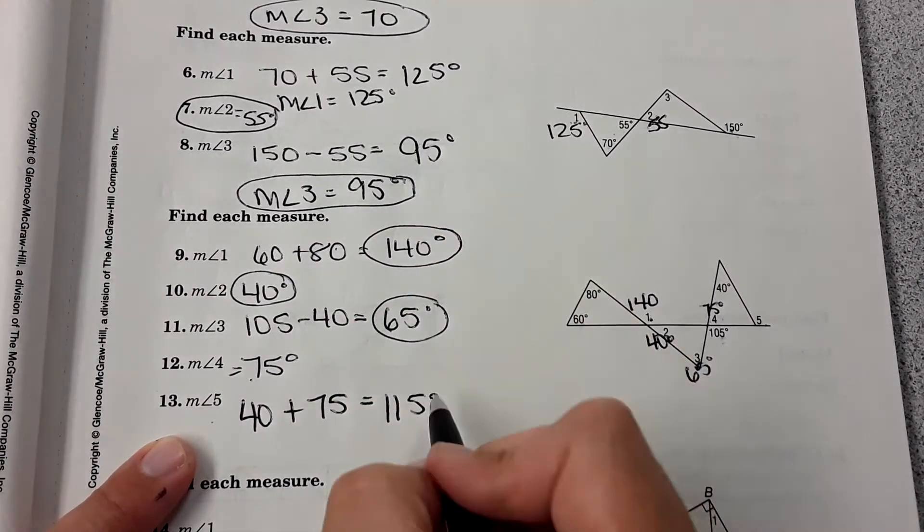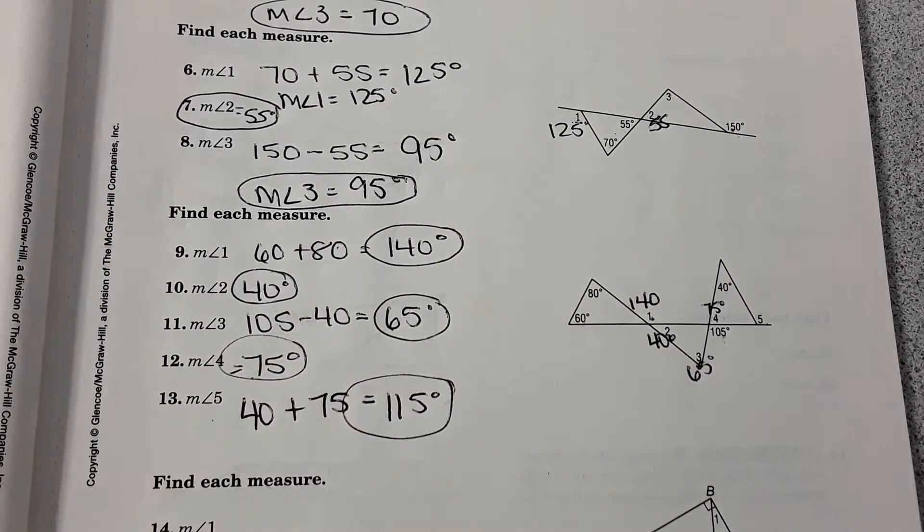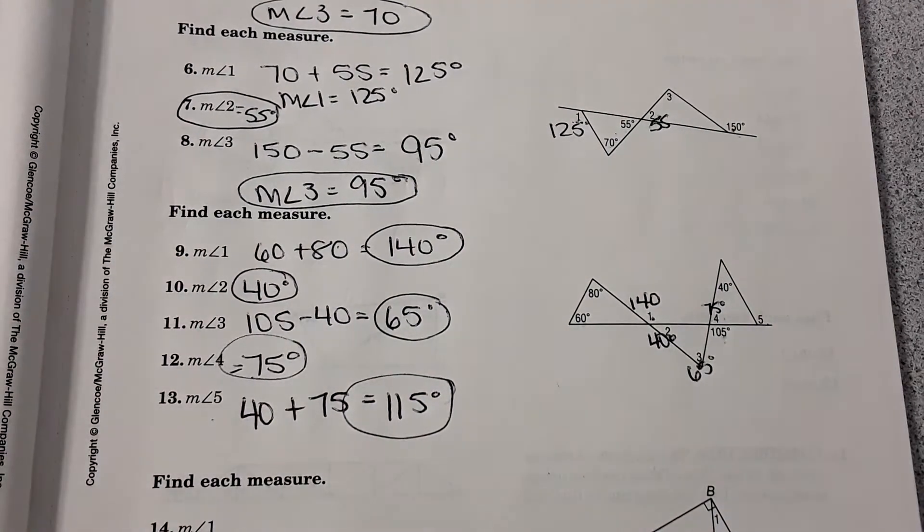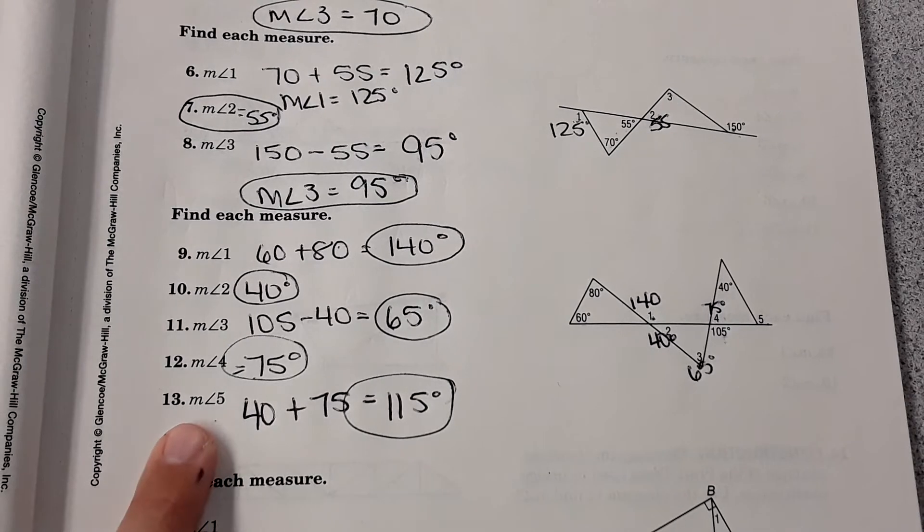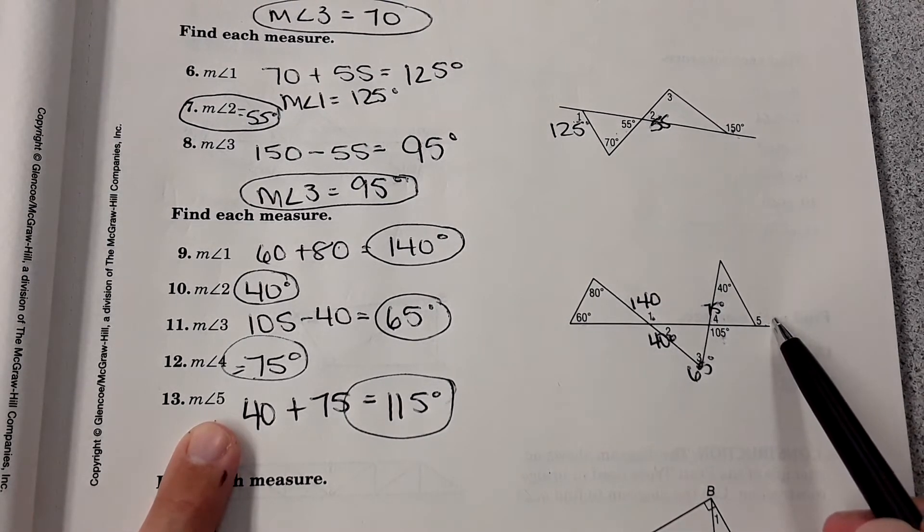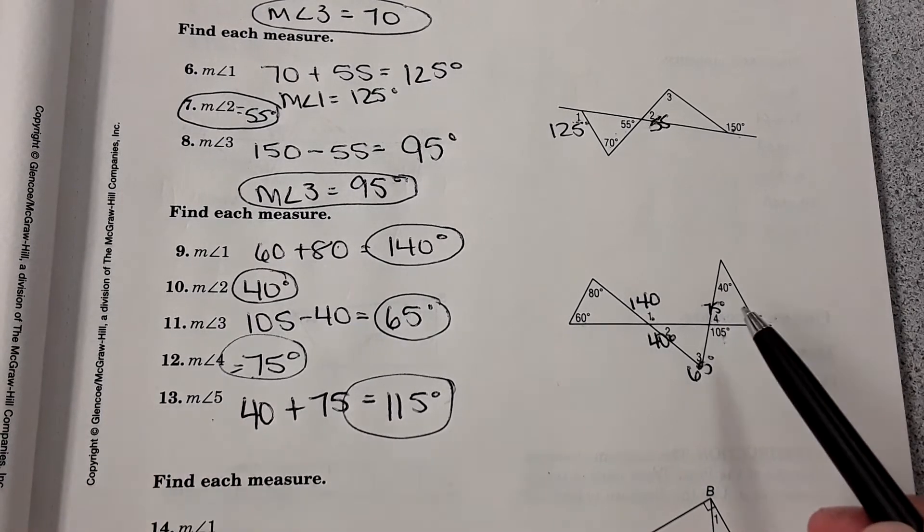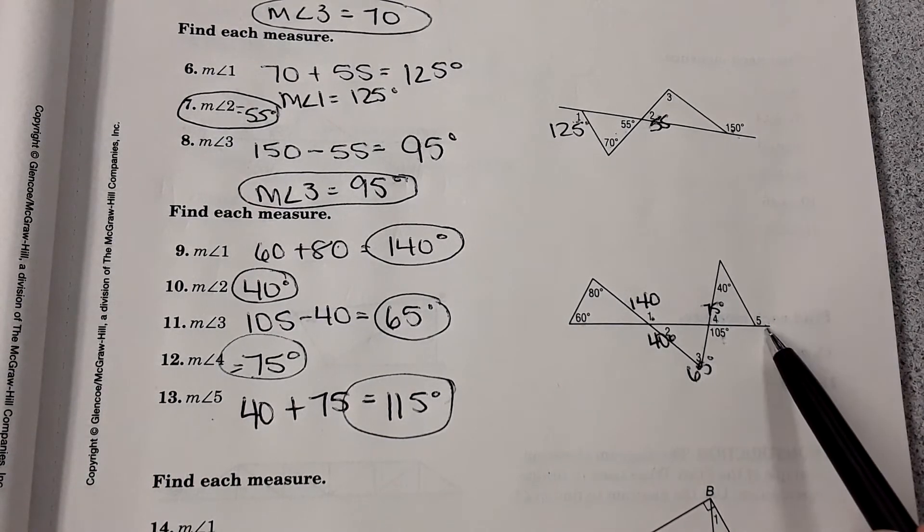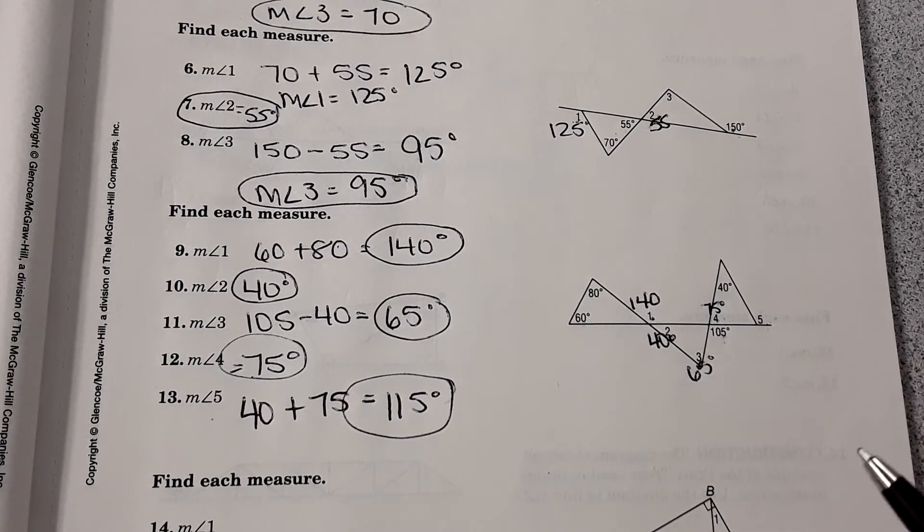What's nice is they do walk you through it step by step, but sometimes in the problems they'll just jump to angle five, and then you'll have to figure out angle four first, but they won't tell you that. So it's kind of like a puzzle at some times. If they don't give you everything you need, see if you can figure it out.